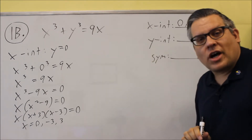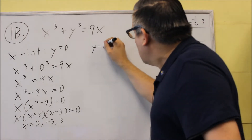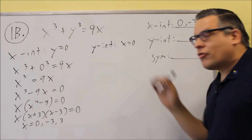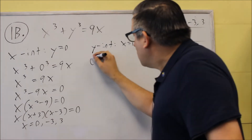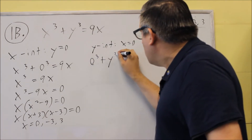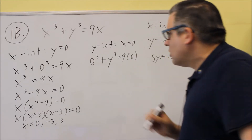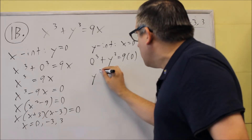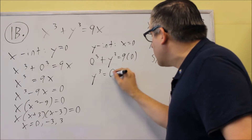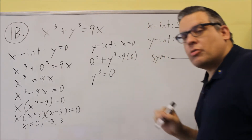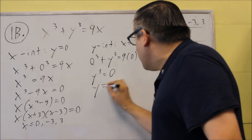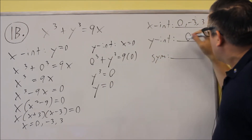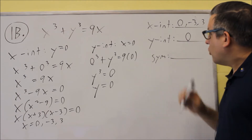Next, we want to find the y-intercept, which is where you put in 0 for x and solve. So 0 cubed plus y cubed equals 9 times 0. This gives y cubed equals 0. Taking the cube root of both sides gives y equals 0. So the y-intercept is just 0.